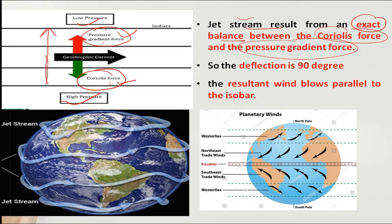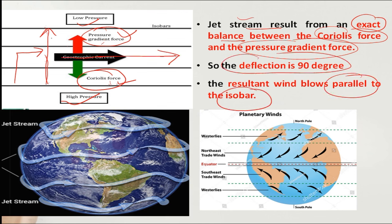The wind deflects 90 degrees due to Coriolis force, and the resultant wind blows parallel to the isobar. The pressure gradient is in the vertical direction, but because of Coriolis force, the jet stream flows parallel to the pressure gradient.